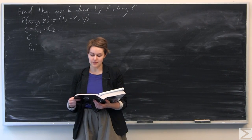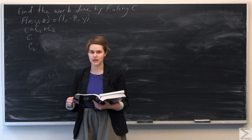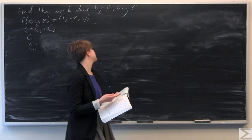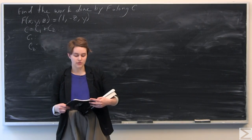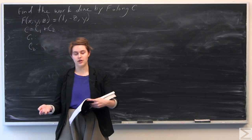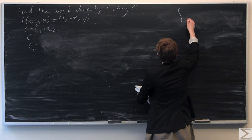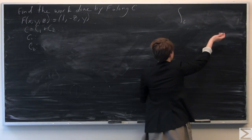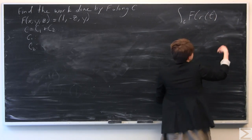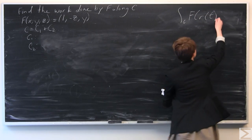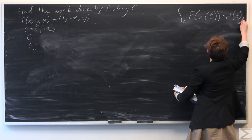This problem asks us to find the work done by F along the curve C, where C is an oriented piecewise regular curve in two parts. We have C equal to C1 plus C2. To find the work done by F along C, we need the general form of the line integral: the integral of F of R of T dotted with R prime of T, DT.